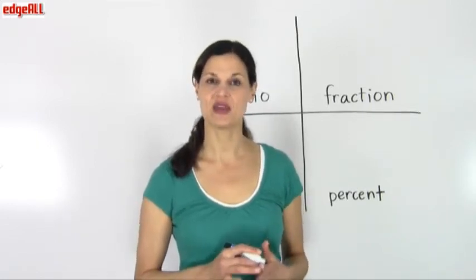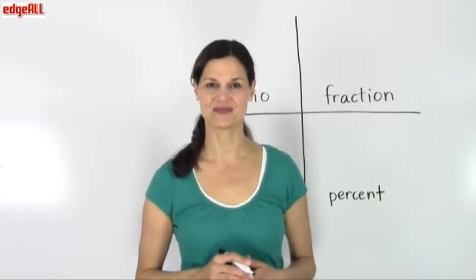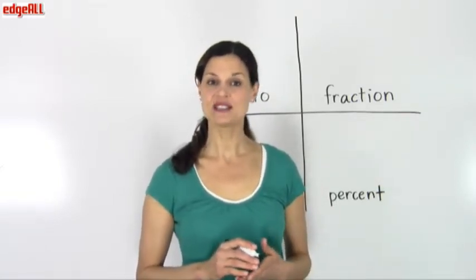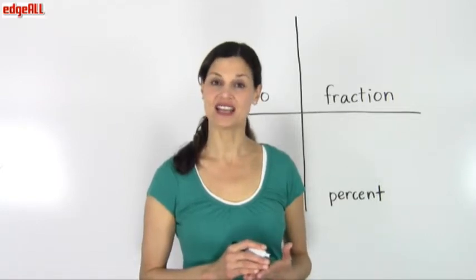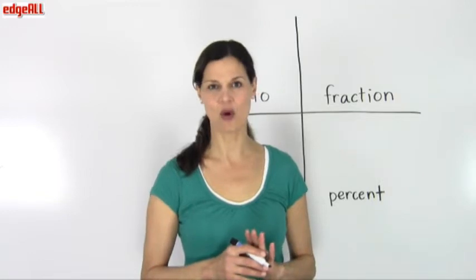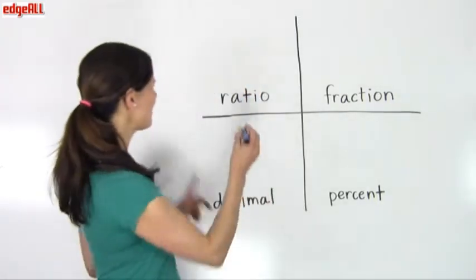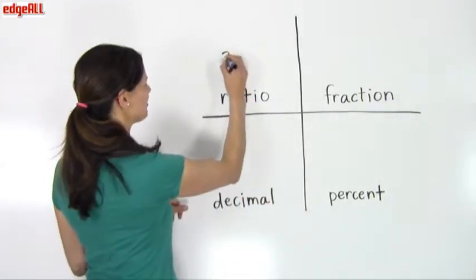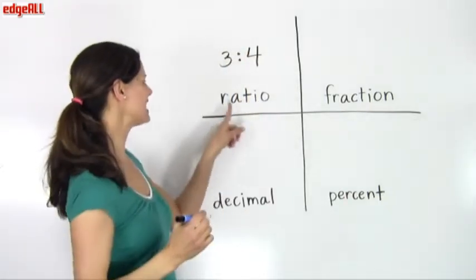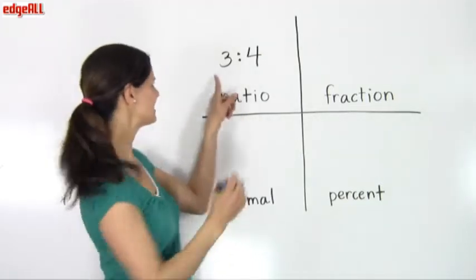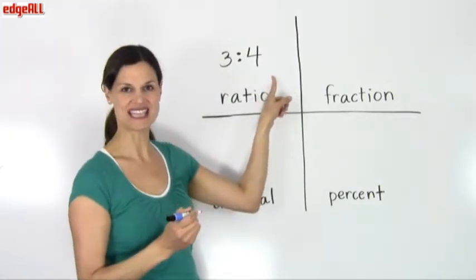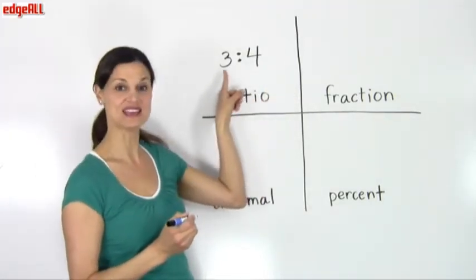First, let's start with ratio and fraction. A ratio of 3 to 4 can also be written as a fraction by writing 3 as the numerator and 4 as the denominator. So if I have a ratio of 3 to 4, I would write it as a ratio like this: 3 and then the two dots, like a colon, 4. And I would say it's a ratio of 3 to 4.